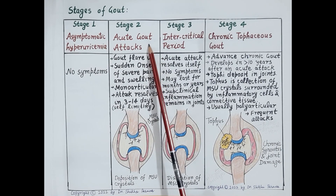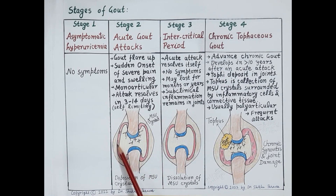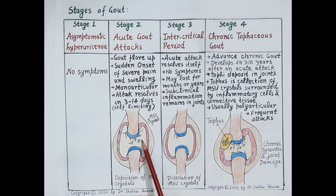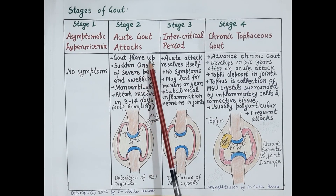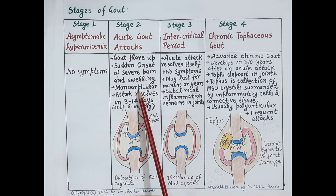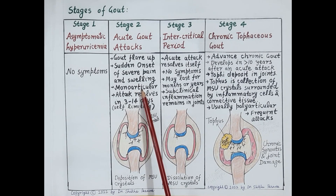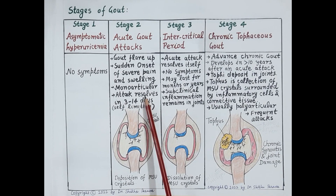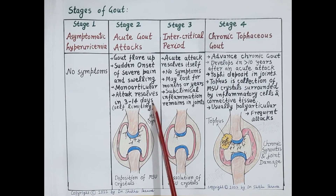Stage two is the acute gout attack. Deposition of monosodium urate crystals in the synovial joint induces inflammation and there is flare up of gout symptoms. There is sudden onset of very severe pain and swelling due to inflammation in the joint, and it is typically monoarticular — that is, deposition of these crystals is seen in one joint. The metatarsophalangeal joint of the big toe is most commonly affected, becoming red, swollen, warm, and tender. This acute gout attack initially resolves in 3 to 14 days, so these attacks are self-limiting.